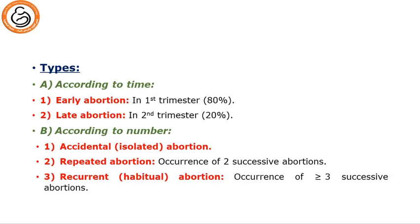For types, miscarriage or abortion is classified according to time of occurrence into early abortion in the first trimester, which is 80 percent, and late abortion in the second trimester up to 20 weeks, which is 20 percent. According to number, we have accidental, isolated, or sporadic abortion; repeated abortion meaning two successive miscarriages; and the third type, recurrent or habitual abortion — occurrence of three or more successive abortions — which will be discussed in detail later.